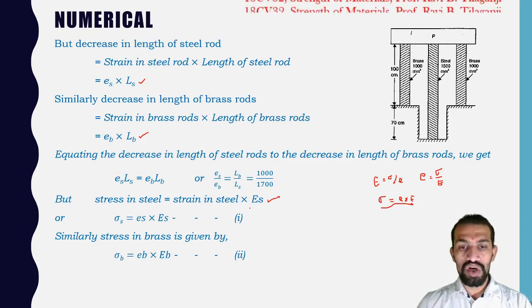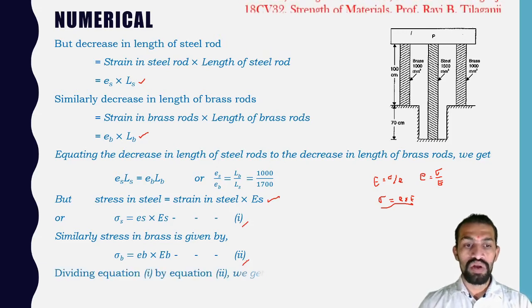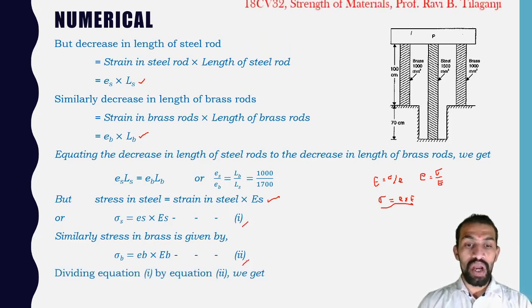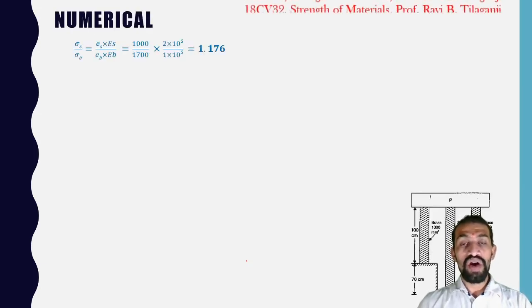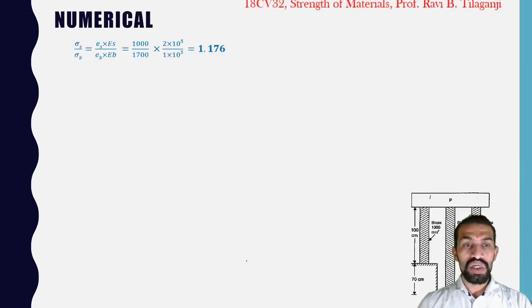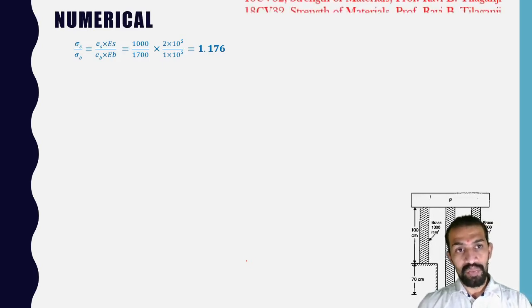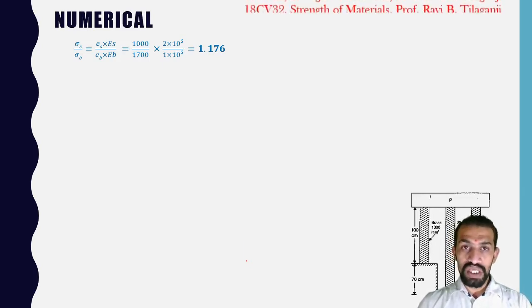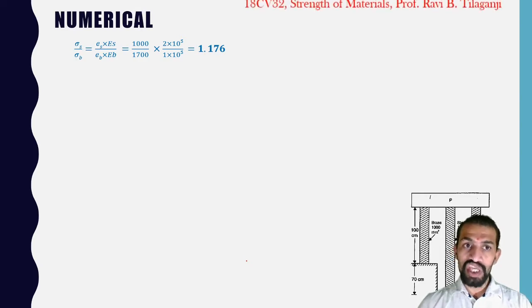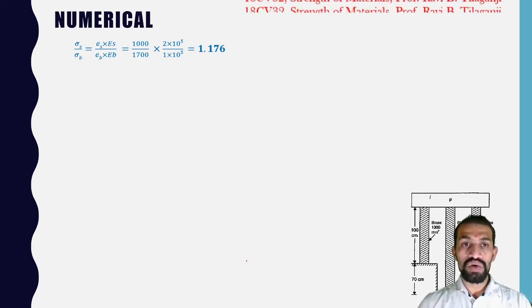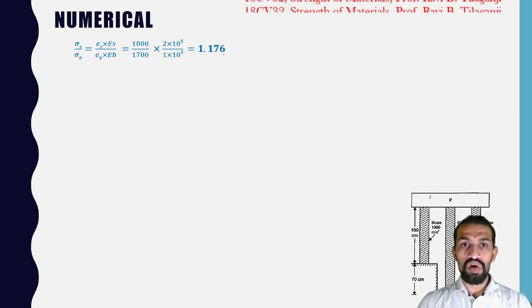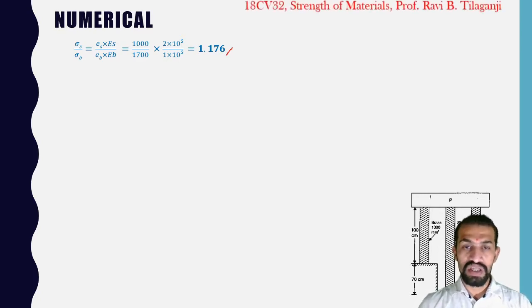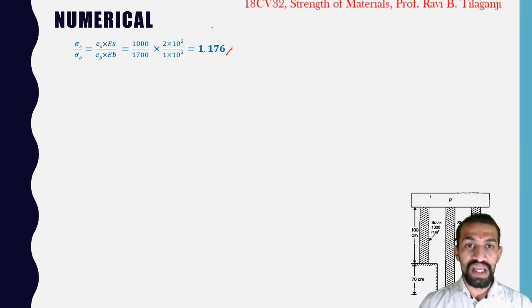Dividing Equation 1 by Equation 2: σS/σB = (ES/EB) × (LS/LB) = (1000/1700) × (2 × 10⁵ / 1 × 10⁵) = 1.176.